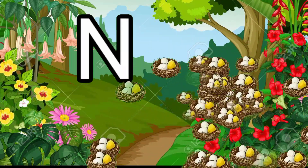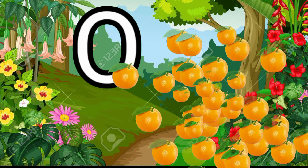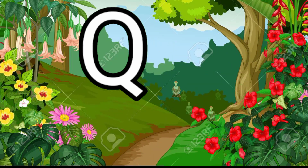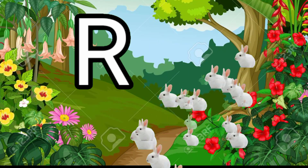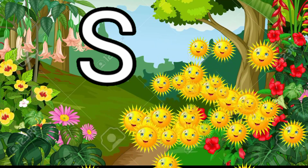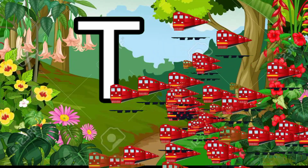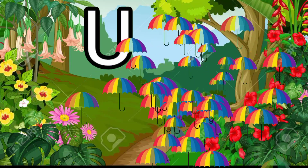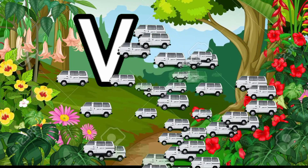O for orange, P for parrot, Q for queen, R for rabbit, S for sun, T for train, U for umbrella, V for van.